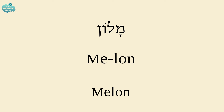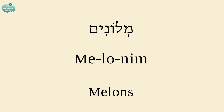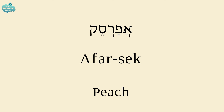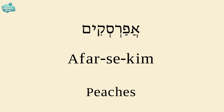A melon is MELON. And the plural for melons is MELONIM. The name for kiwi is KIWI, just like in English. A peach is AFARSEK. And the plural for peaches is AFARSEKIM.